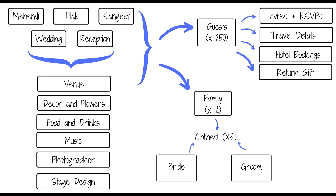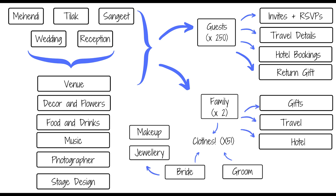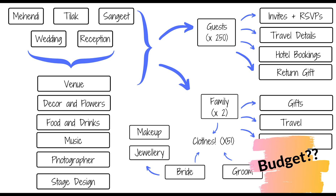Also don't forget about the clothes, and multiply that by 5 for each event. Then of course the family — there are gifts, travel, and where they'll stay. Lastly, the bride's makeup and jewelry for each event as well. Oh, and did I mention this all has to be managed within a budget?